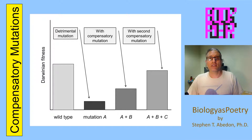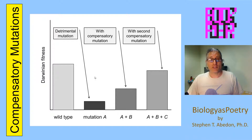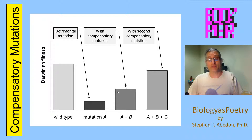Compensatory mutations are selected for because they reduce the negative impact of another mutation. If you start with the wild-type organism, and that organism has a detrimental mutation, that mutation lowers that organism's fitness. However, it's possible to have additional mutations that have the effect of raising the fitness of the organism, particularly given the presence of the first mutation, and these mutations are called compensatory mutations.